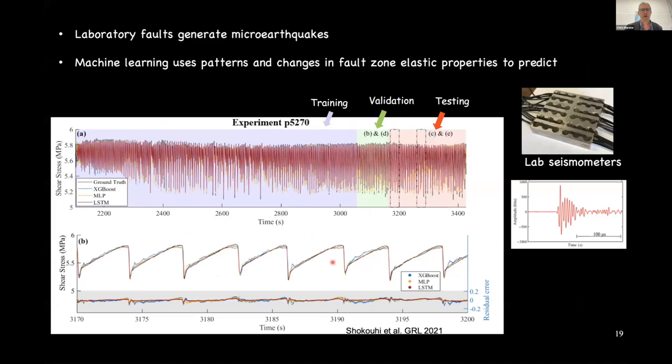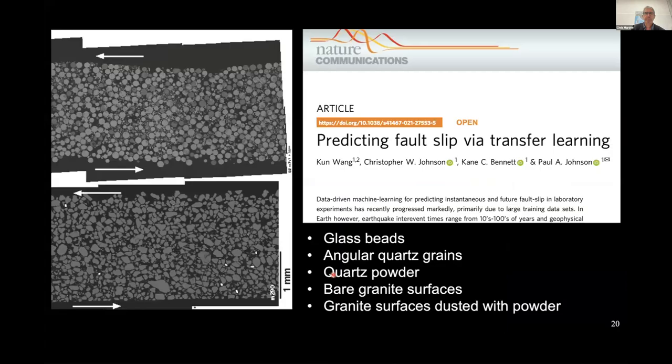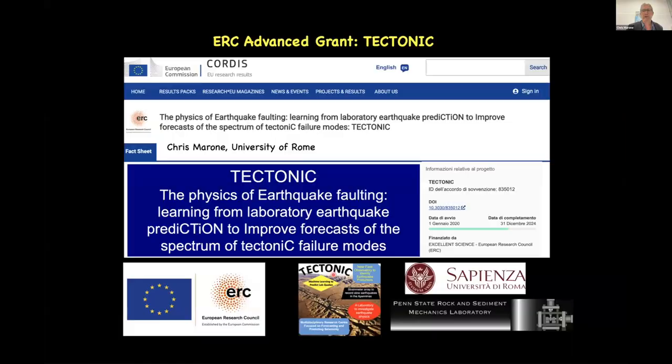Training, validation, and testing is going on — a standard approach. You can see the relationship between a couple of different models and the data, and the residuals below. The active source deep learning models are really good at predicting shear stress. We've also been working on transfer learning — how to take information from the lab to the field, or between lab experiments. With deep learning, the transfer learning gets better.